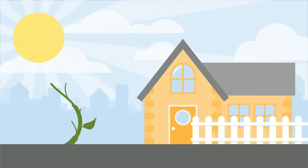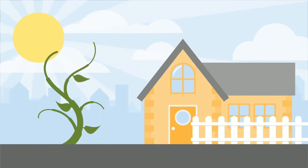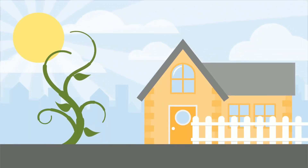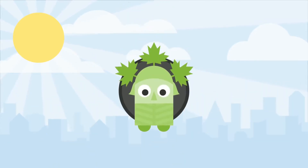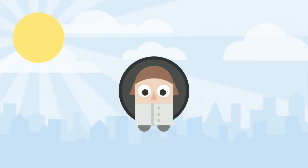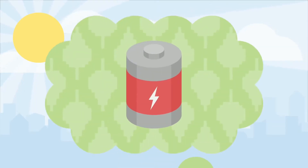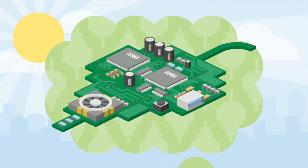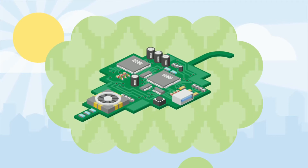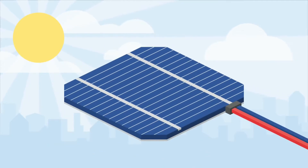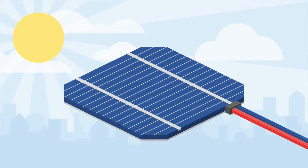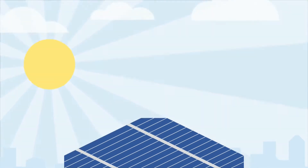Plants get their energy from the sun through their leaves in a process called photosynthesis. We humans don't have our own leaves, but maybe we can get energy from the sun in a different way — electrical energy, that is. Could there be some kind of electrical leaf? A solar cell gathers light from the sun and generates electricity, just as a leaf generates food for a plant. Let's find out how.